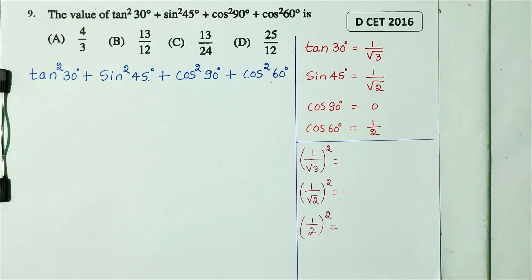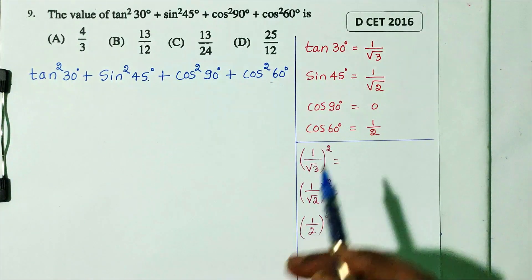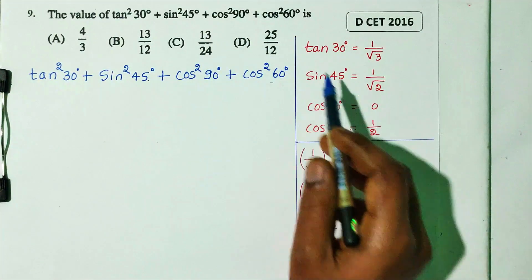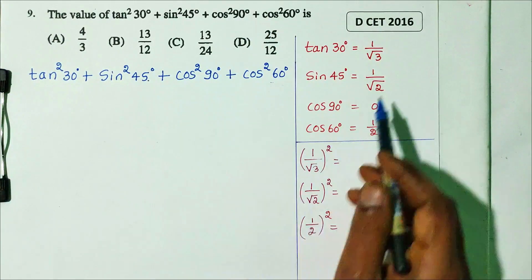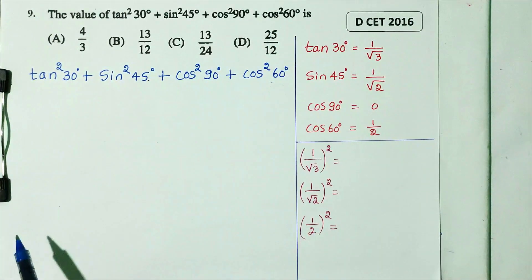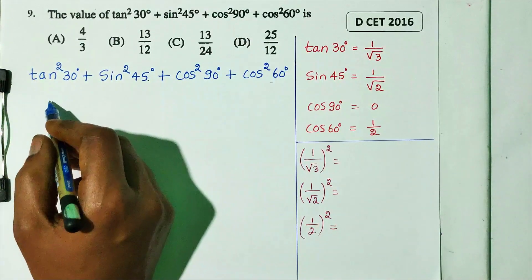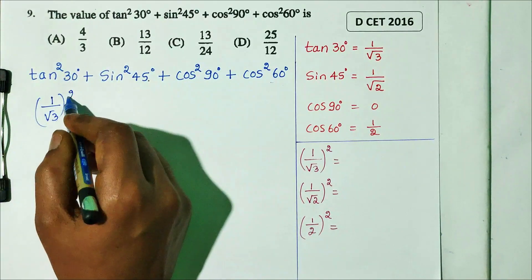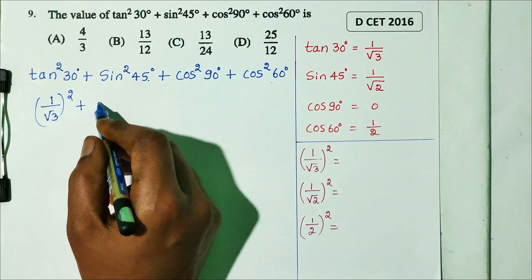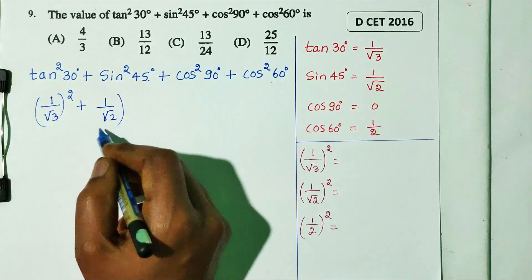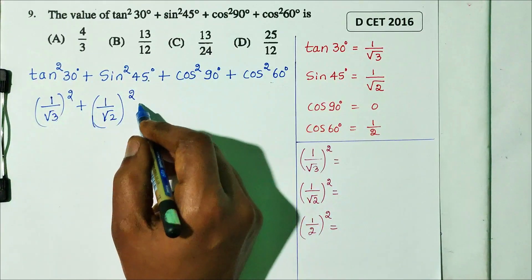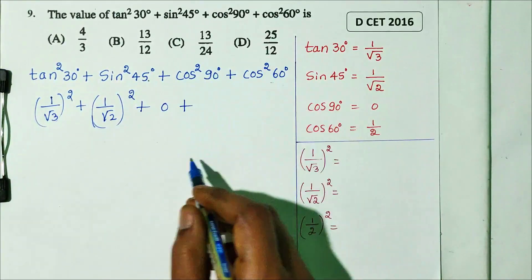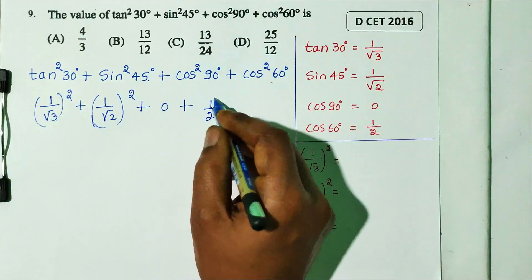First, substitute the standard angle values. Tan 30 is 1 by root 3, sin 45 is 1 by root 2, cos 90 is 0, cos 60 is 1 by 2. So the expression becomes (1/√3)² + (1/√2)² + 0² + (1/2)².